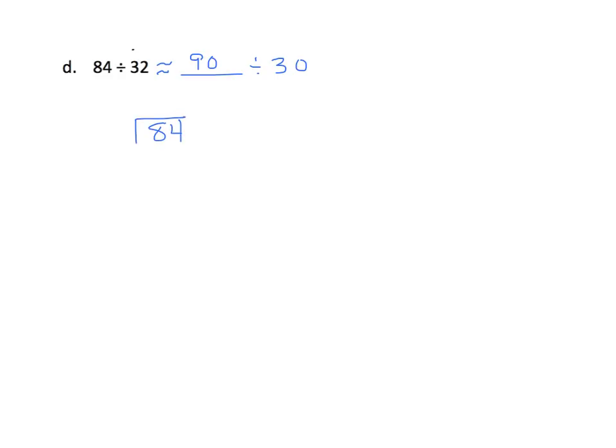84 divided by 32. We first have to multiply, since we got our estimate of 3, we're going to try 3. We'll put our 3 up there, and we'll multiply 3 times 32, and we get 96. 96 is greater than our dividend of 84, so that's too high. So we're going to have to try a different number.